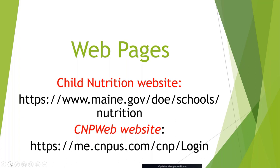On the second website, which is CNPweb, here you will find how to place your monthly survey orders, find your applications, your entitlement, your survey — which includes your annual survey — allocations, orders, and monthly orders.